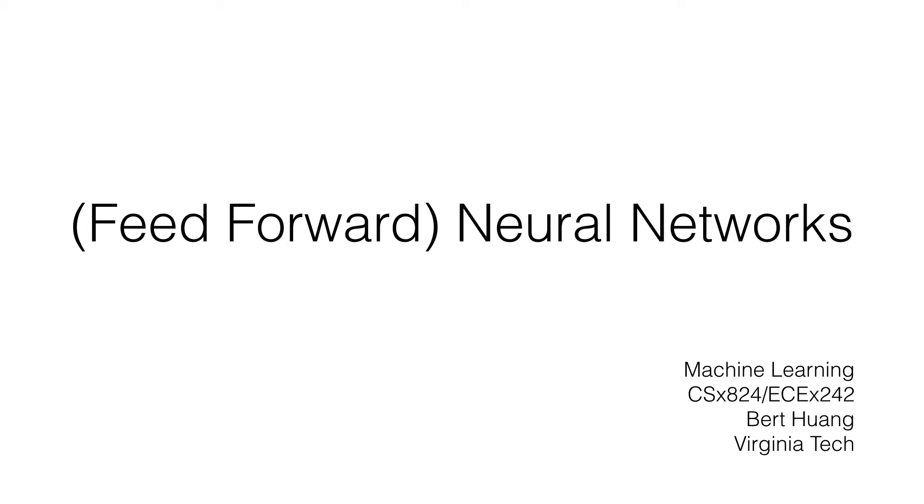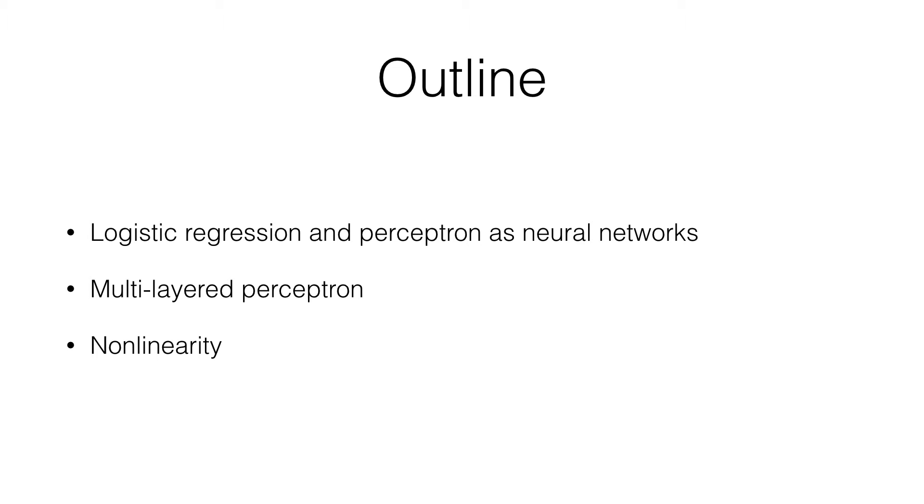The plan for this video is to go over the idea of logistic regression and perceptron as types of neural networks. In fact, they're usually considered the simplest type of neural network you could have. Then we'll look at something called the multi-layered perceptron, which is the first step toward the deep types of neural networks that have become really popular lately. And then I'll show you some of the possible outputs that you can get with these multi-layered perceptrons.